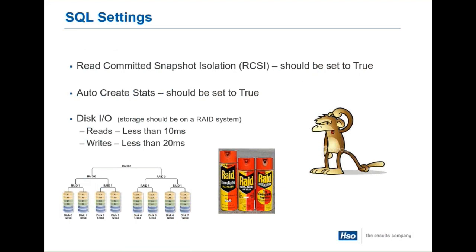Another setting to have set to true is the read committed snapshot isolation. And then the auto create stats — statistics are going to help with your query plans. If the statistic is a certain way, SQL is going to say let's continue to use this plan. But as your statistics get updated, it may decide that a different plan is more efficient. So you want those statistics to continually be updated. For DISC-IO, the key is to be using a RAID system. Your reads and writes need to be less than 10 milliseconds and 20 milliseconds respectively. If someone is not using a RAID system, their system is really struggling to keep up with everything.